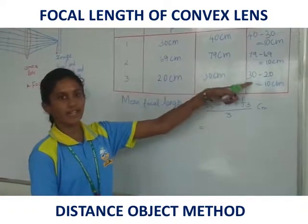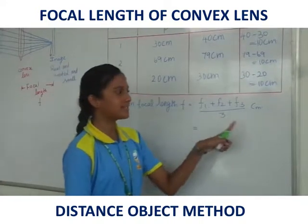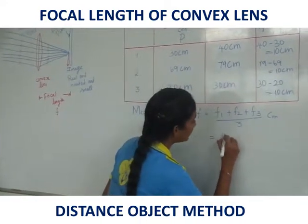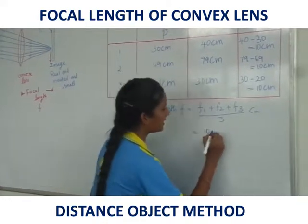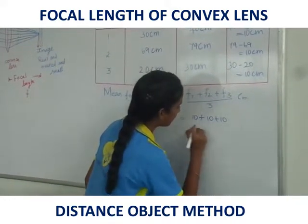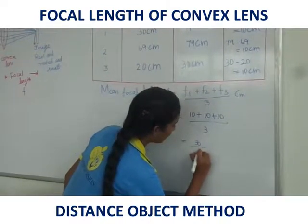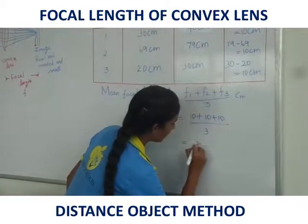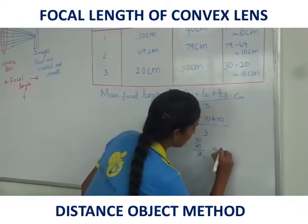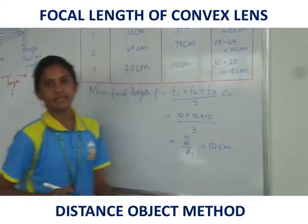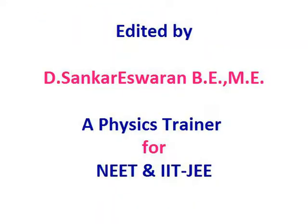We found three readings. We are going to add these three readings and divide by 3 to find the mean focal length. The focal length is 10 cm. Thank you.